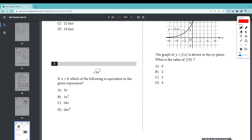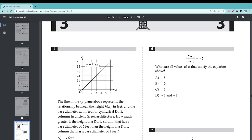Number five: If x is greater than zero, which is equivalent to the expression? Well, square root of 9x squared is 3x. Let's say we'll get number six.